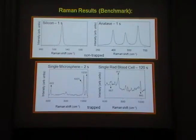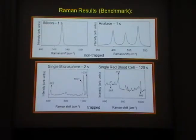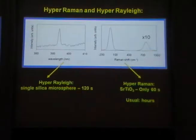Now you can track spermatozoids and at the same point — not at the same time, because this Raman was taking 120 seconds — you can make a time series and see spectral changes, or biochemical reactions happening.